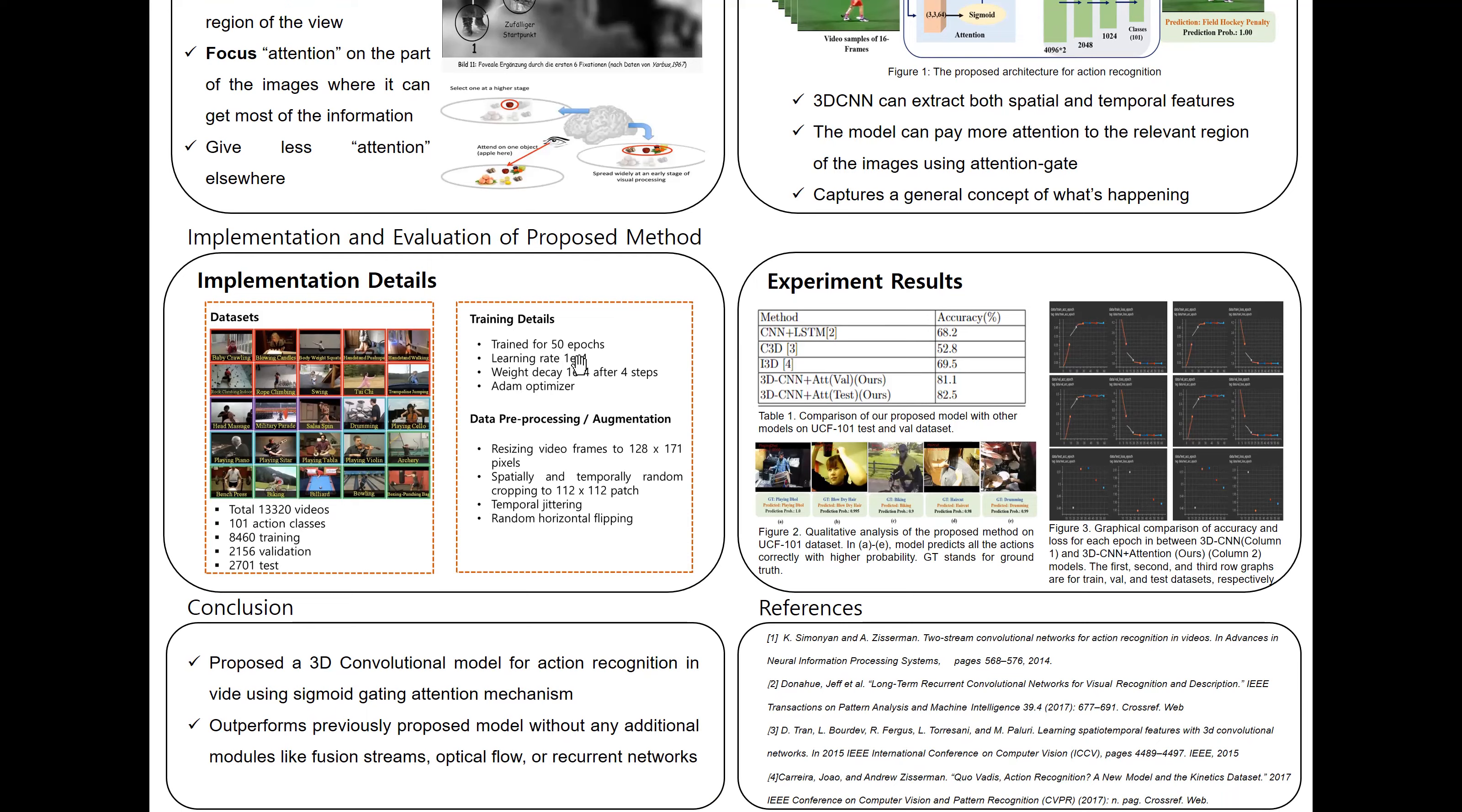The training details are as follows. We train the whole model for 50 epochs with learning rate and rate decay of 0.0004, and we use Adam optimizer. We also did data processing and data augmentation, like resizing the video frames to 128 by 171 pixels. We use data augmentation like spatially and temporally random cropping to 112 by 112 patch and temporal jittering and random horizontal flipping.